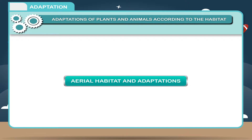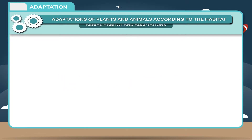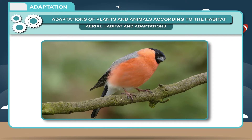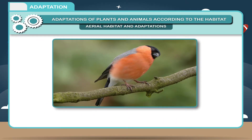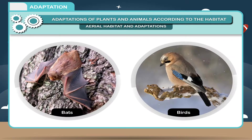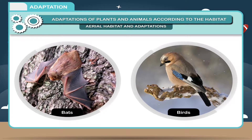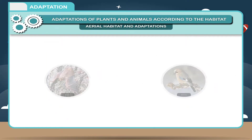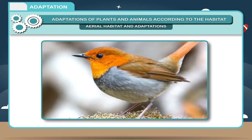Aerial Habitat and Adaptations: Animals which are adapted for the aerial mode of life are known as aerial animals. Common animals are bats and birds. They have the following adaptations. 1. They have a streamlined body which is covered with feathers.